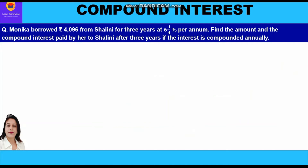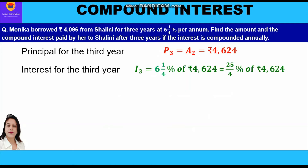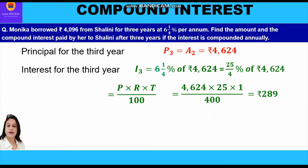The principal for the third year is the amount of the second year, which is equal to 4624. The interest for the third year will be calculated on this new principal at the rate of 25 by 4 percent of 4624. Applying the simple interest formula for one year: PRT upon 100 equals 4624 into 25 into 1 upon 400, which is equal to rupees 289.